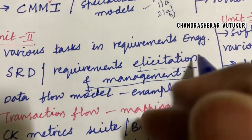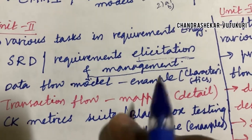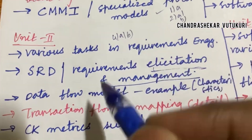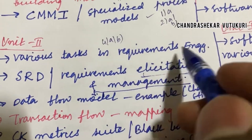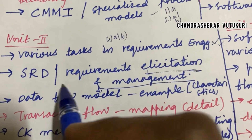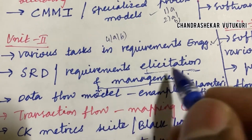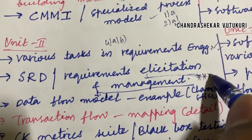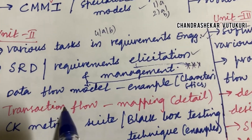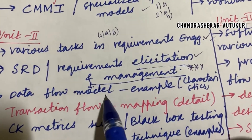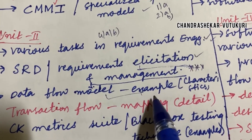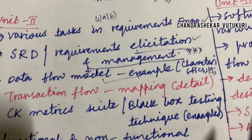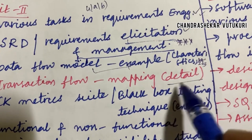Do not write in paragraph form. The next questions I'm going to highlight are 4A as well as 4B. The various tasks in requirement engineering, discussing the SRD, and requirement elicitation and management is said to be a top most question. Related to elicitation: the data flow model along with an example and its characteristics may also be a two or three mark question. Transaction flow mapping — I'll explain in detail.